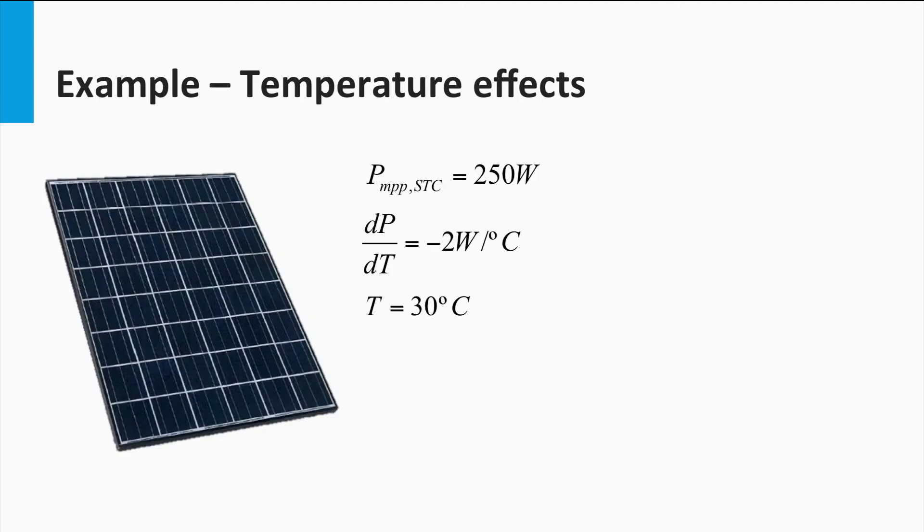Let's take a look at an example. If the maximum power output of a PV module under standard test conditions is 250 watts, and the temperature coefficient of power is minus 2 watts per degree Celsius, then the module's power output at a temperature of 30 degrees Celsius can be calculated as follows. The power is 250 watts plus minus 2 watts per degree multiplied by the temperature difference 30 minus 25 degrees Celsius, which gives you 240 watts.